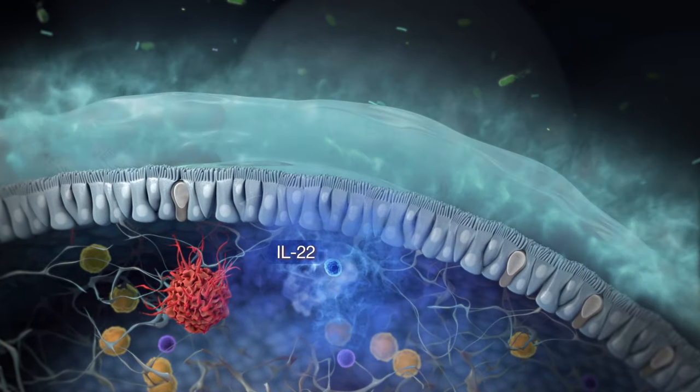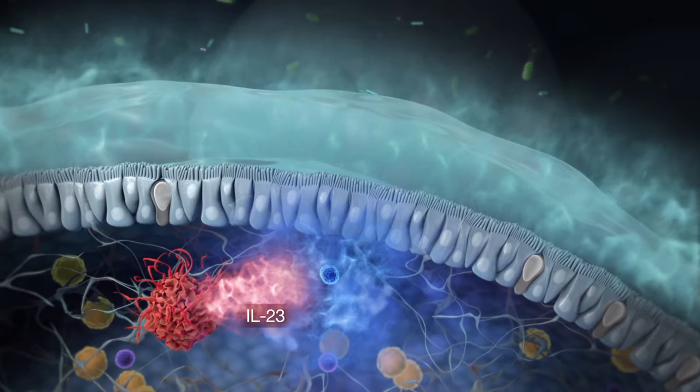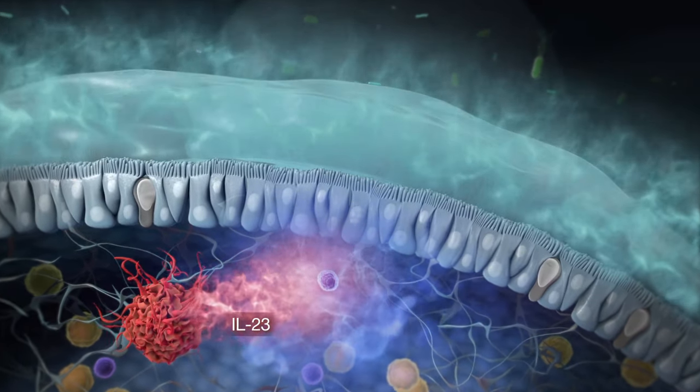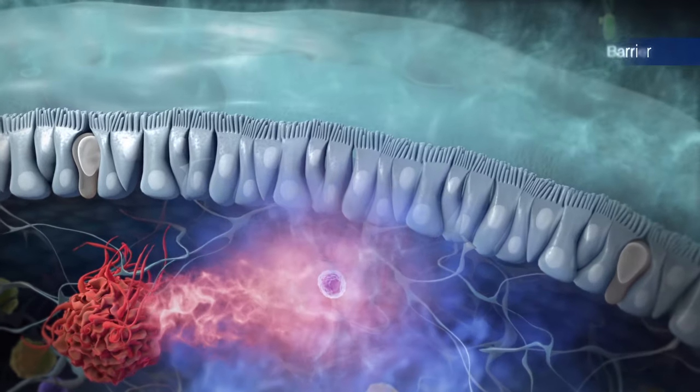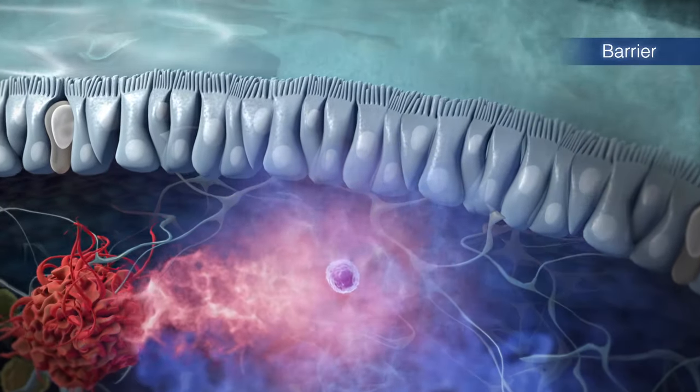IL-22 also enhances IL-23 production in dendritic cells. This dialogue between dendritic cells and ILC3s maintains the barrier against pathogenic or commensal bacteria.